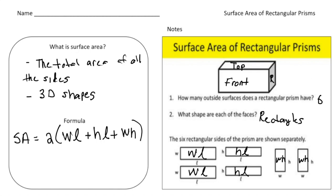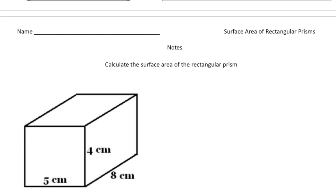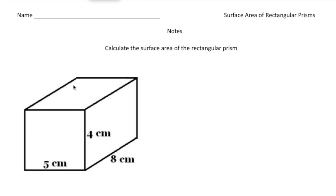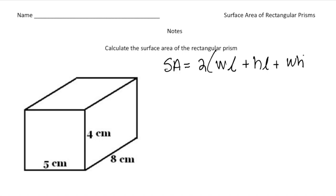Now let's turn the page and try a problem together. It says: calculate the surface area of the rectangular prism. To do that, let's first write down the formula — surface area equals two times the quantity of (width times length) plus (height times length) plus (width times height). I like to label the dimensions: the five centimeters is the length, the eight centimeters is the width, and the four centimeters going up is the height. Now it's just a matter of carefully plugging in what we know.